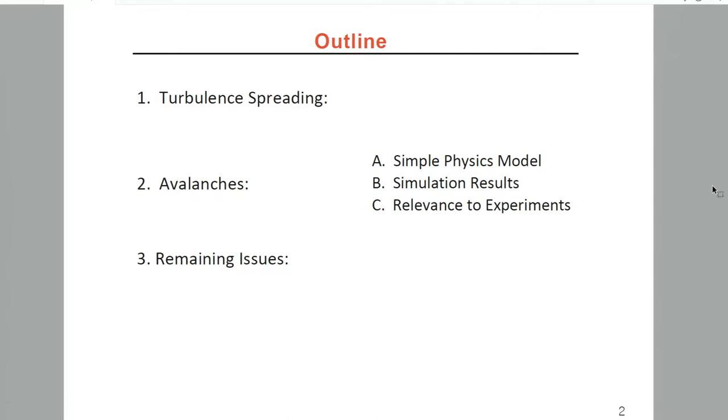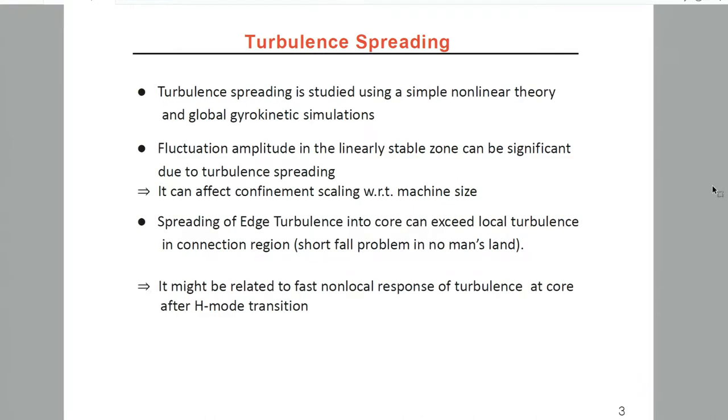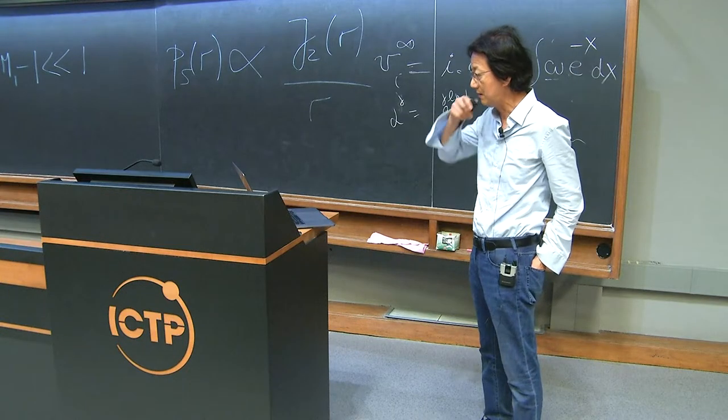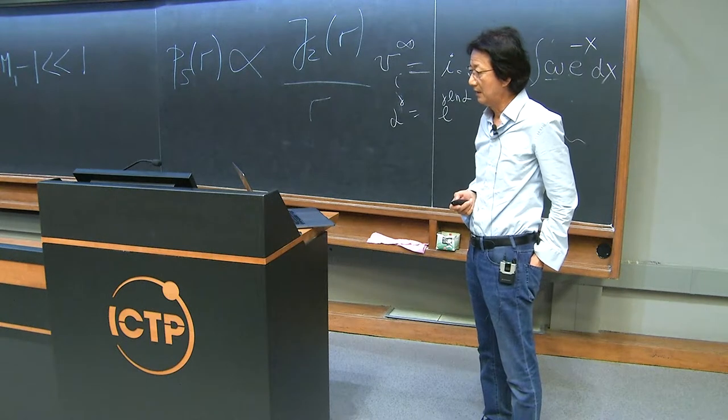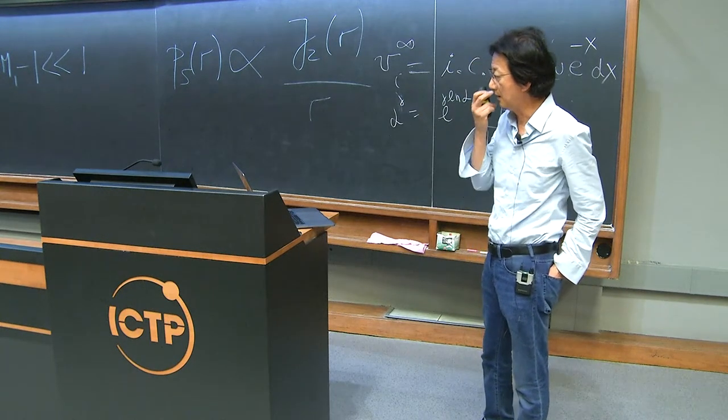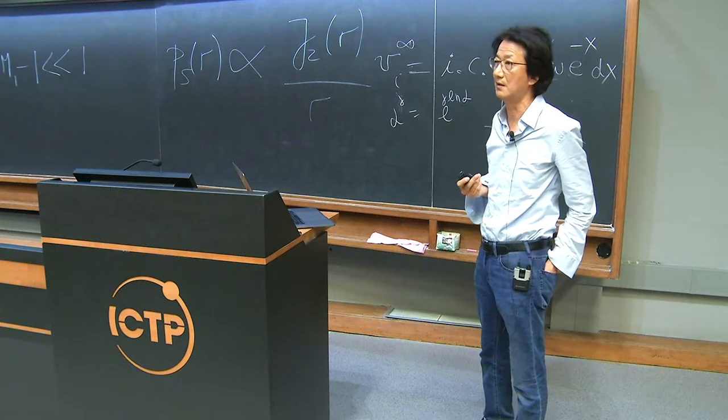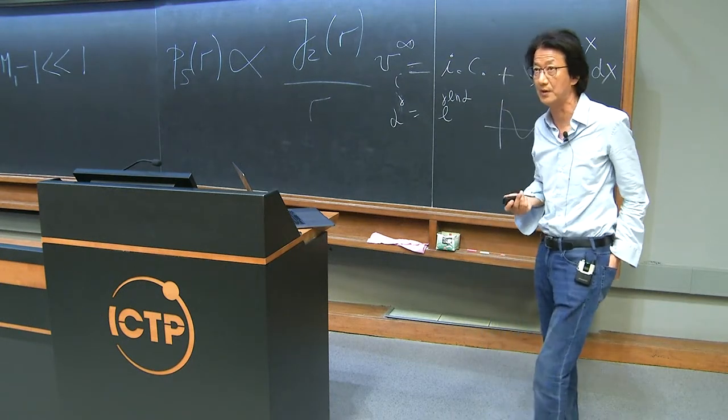Due to time limits, I'll focus on the simple physics side. Turbulence spreading is studied using very simple nonlinear theory and global gyrokinetic simulation. What I mean by turbulence spreading is fluctuation amplitude in the linearly stable zone can be significant due to turbulence spreading, which can affect confinement scaling with respect to machine size.